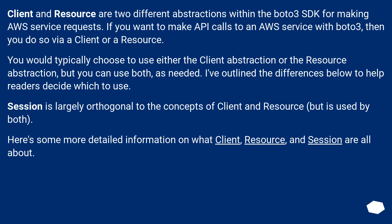Client and Resource are two different abstractions within the Boto3 SDK for making AWS service requests. If you want to make API calls to an AWS service with Boto3, you do so via a Client or a Resource. You would typically choose one abstraction or the other, but you can use both as needed. Session is largely orthogonal to the concept of Client and Resource, but is used by both. Here's more detailed information on what Client, Resource, and Session are all about.